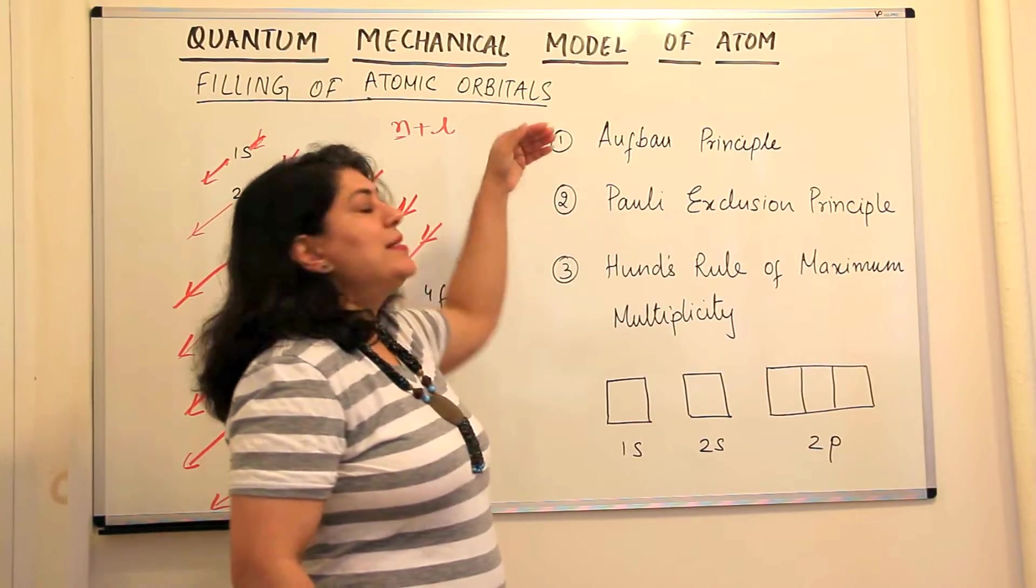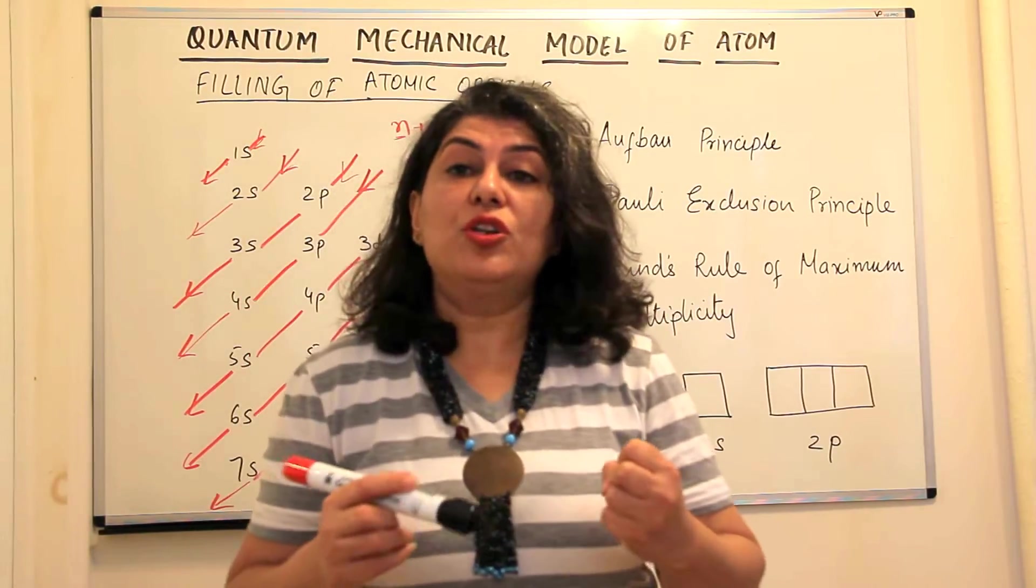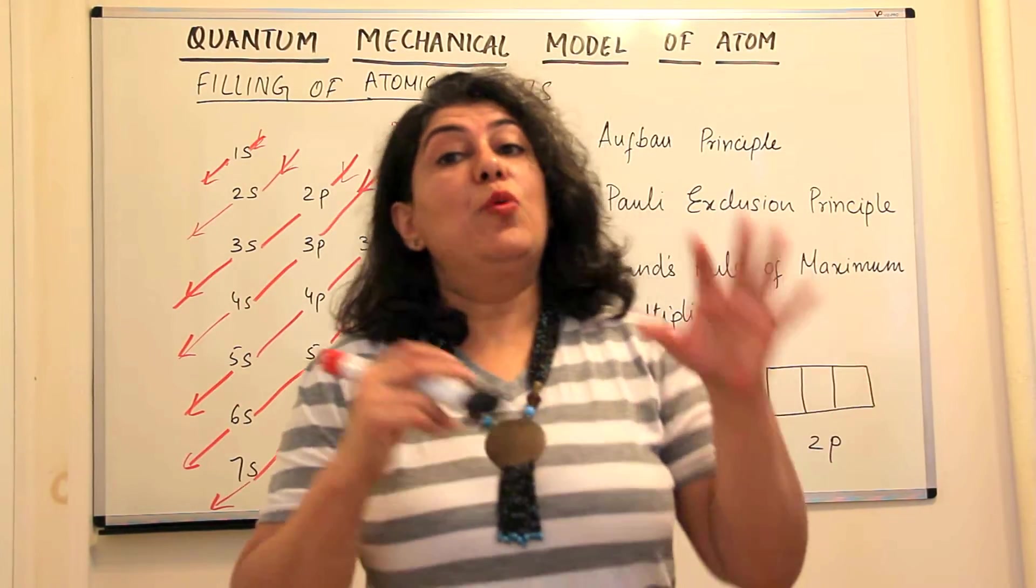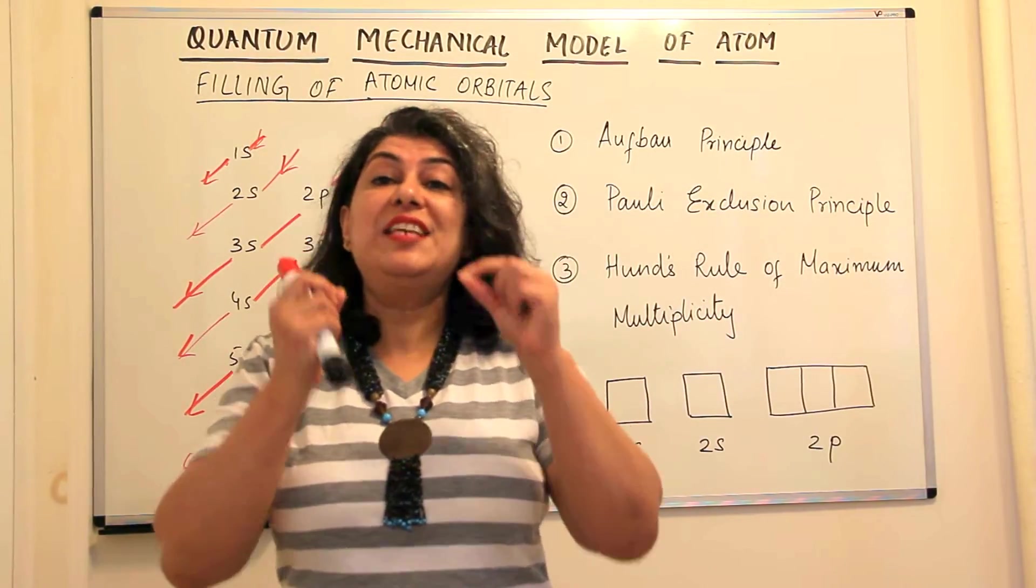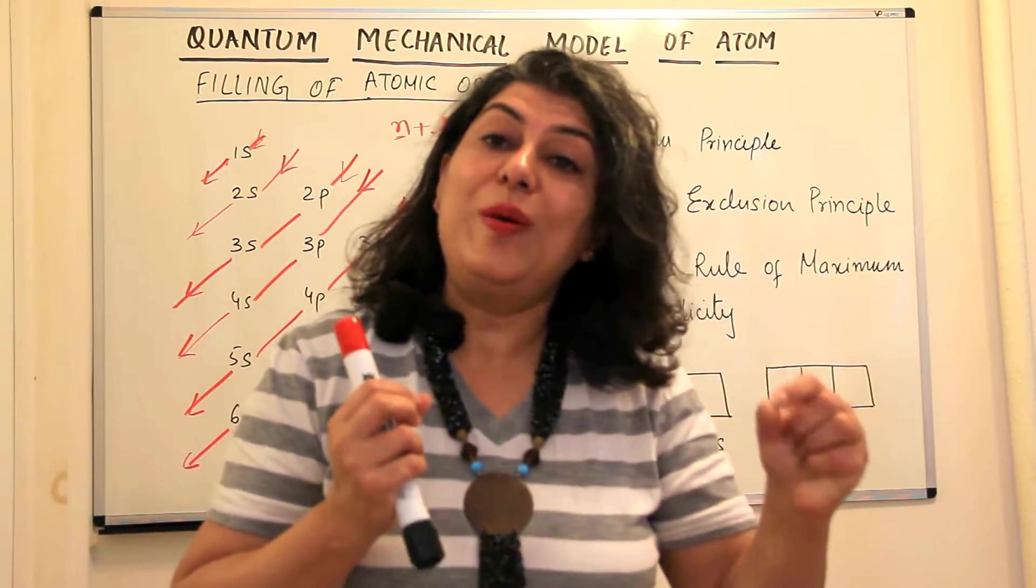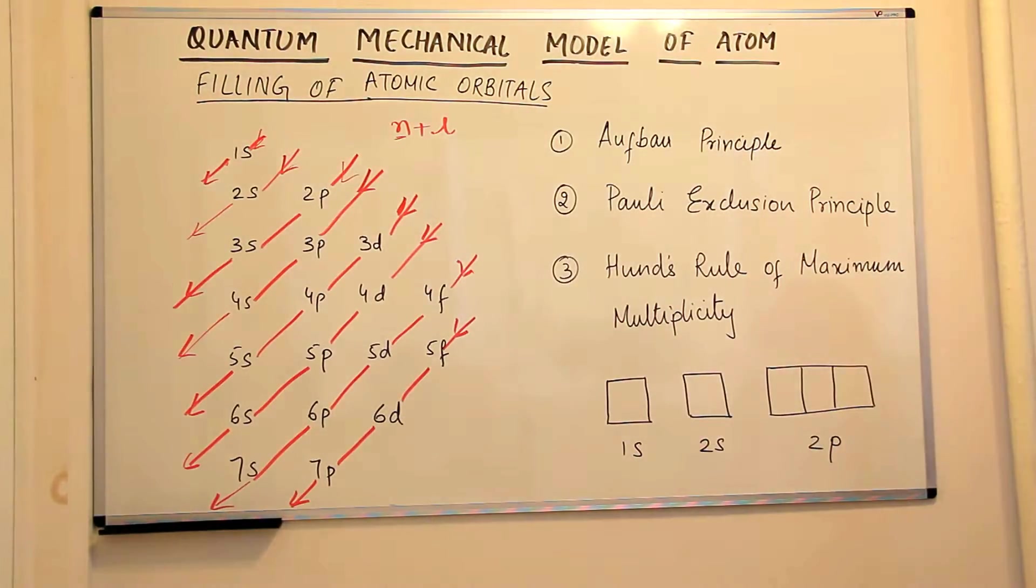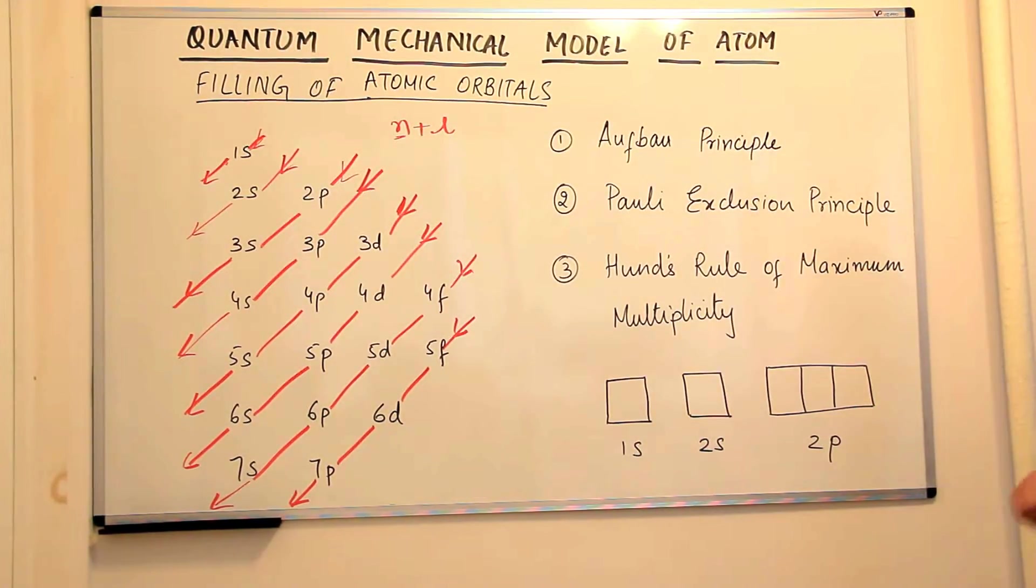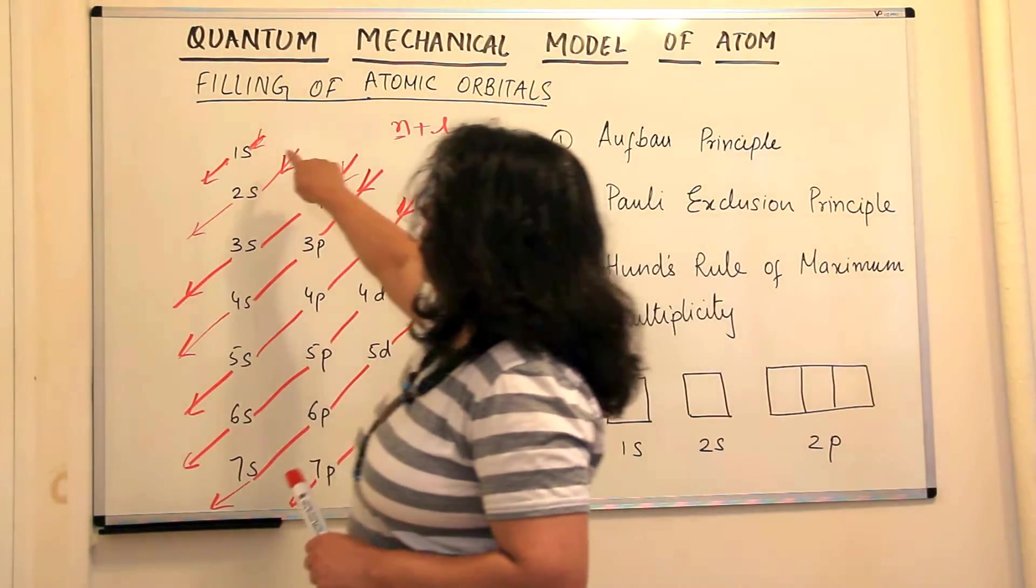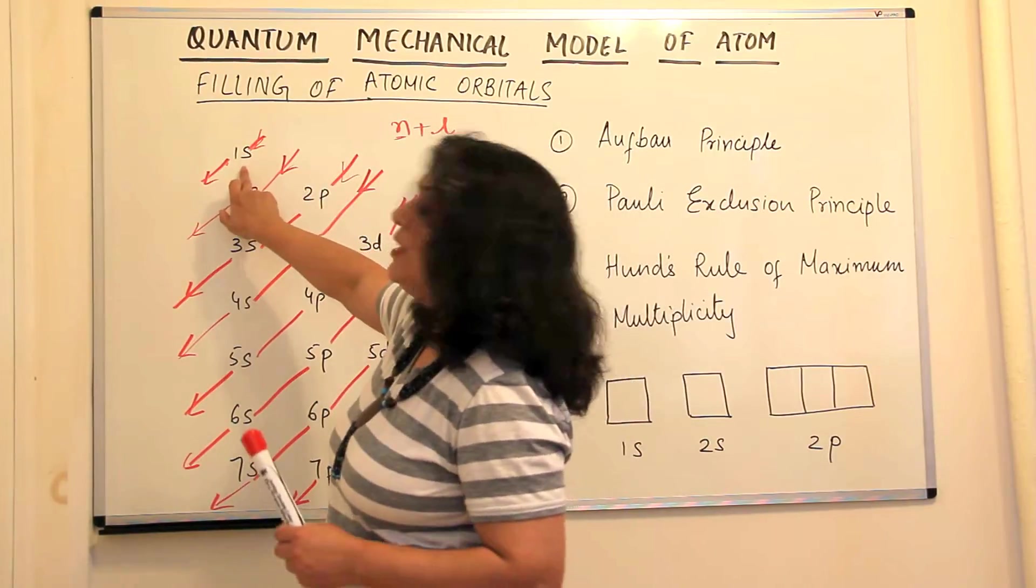So there are three principles which decide how electrons fill up in these orbitals. These three are, the first one is the Aufbau principle. Aufbau principle says that electrons when they fill up in the ground state of an atom, when electrons fill up, they always do so in the sequence of filling up the lowest energy level first. Let me read the exact language of the Aufbau principle. The Aufbau principle says that in the ground state of the atoms, the orbitals are filled in order of their increasing energies.